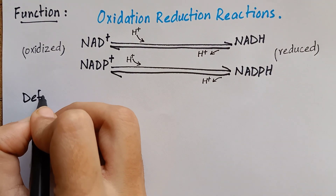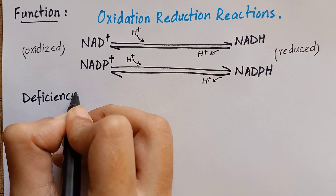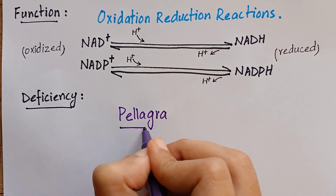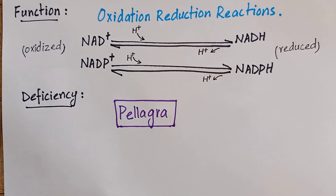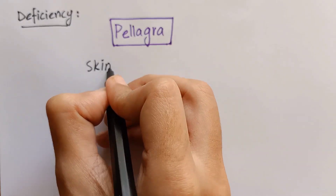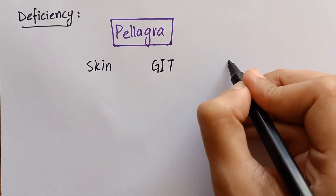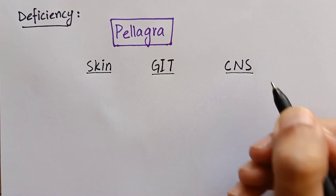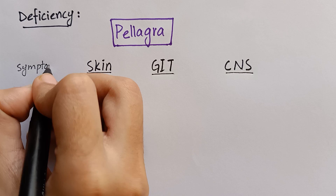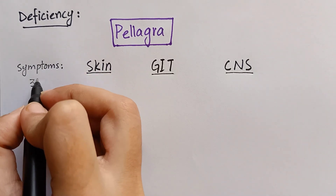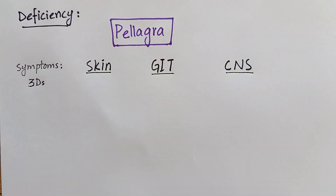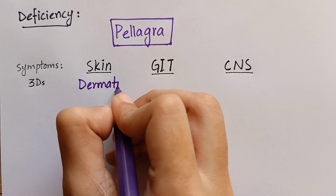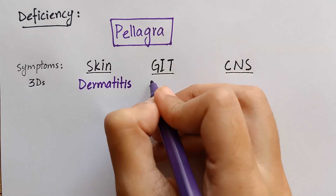Coming to the clinical indications, the deficiency of niacin causes a condition called pellagra. Pellagra involves the skin, gastrointestinal tract, and central nervous system. The symptoms of pellagra progress through three D's, the first of which is dermatitis, usually in the areas of skin that are exposed to sunlight.